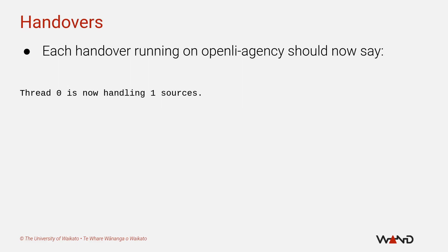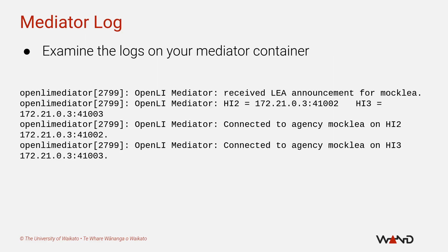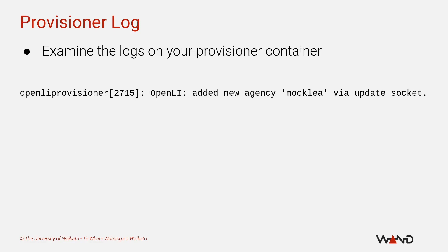Once you run your curl command on the provisioner container, you should hopefully see some HTML content returned as the response. If not, something went wrong — the response you get instead will hopefully give you some hints as to what needs to be changed. If you switch back to the terminals where your trace_packet_dump instances are running on the openli-agency container, each instance should now have written the message 'thread 0 is now handling 1 sources'. This indicates that the mediator has successfully established the handover session with your mock agency. You should also see evidence of the mock agency announcement in the OpenLI mediator logs, as well as messages indicating that the handover sessions have been established.